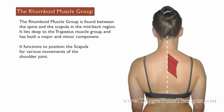The rhomboid muscle group is found between the spine and the scapula in the mid-back region. It lies deep to the trapezius muscle group and has both a major and minor component. It functions to position the scapula for various movements of the shoulder joint.